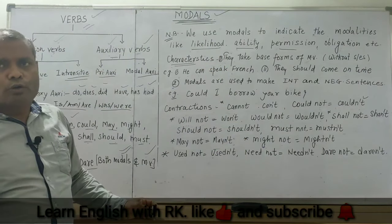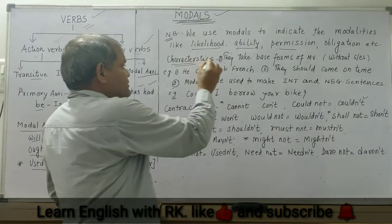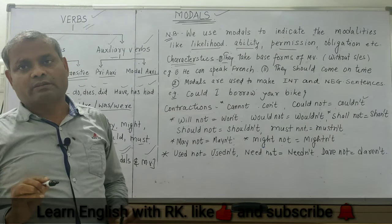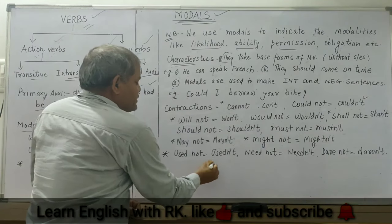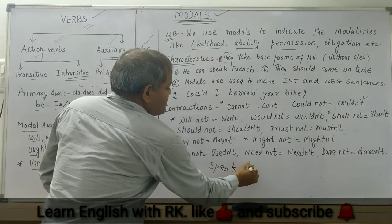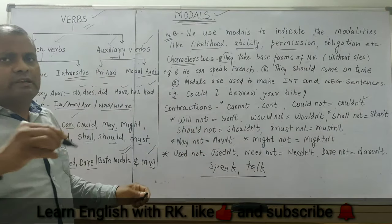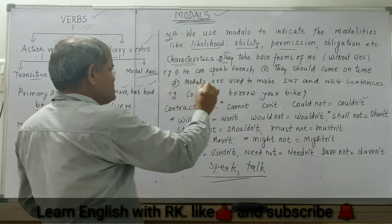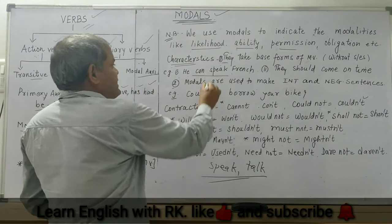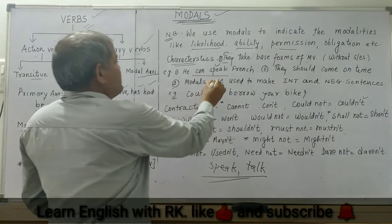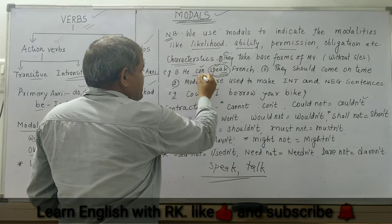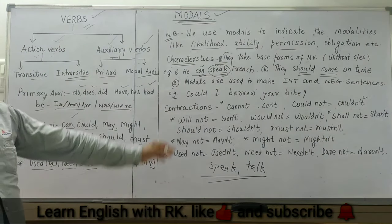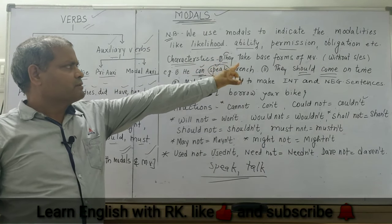What are the characteristics of modals or modal auxiliaries? The first characteristic is that they take the base form of the main verb. The base form means the first form — like 'speak' is the base form. For example: 'He can speak French.' We cannot say 'He can speaks French' because we are using it after the modal 'can'. Similarly, 'They should come on time' — 'come' is in base form.